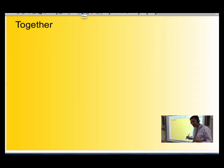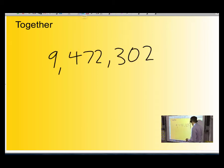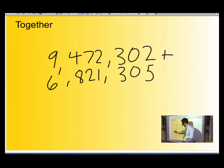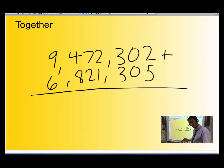Here we are in the together phase. We're going to do one together. So let's do 9,472,302 plus 6,821,305. Get your book out, get your whiteboard, whatever you've got, and let's do this one together.